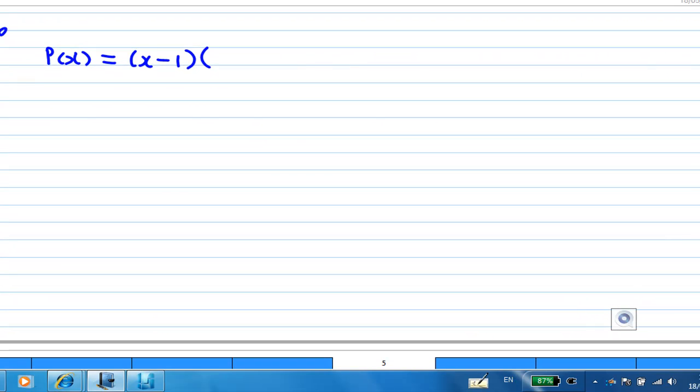Now x squared plus 2x minus 15 is easily factorized as (x plus 5)(x minus 3).